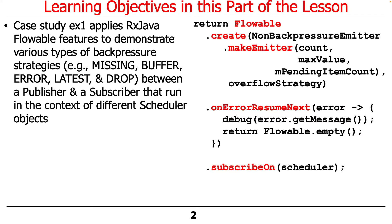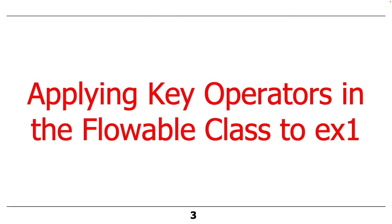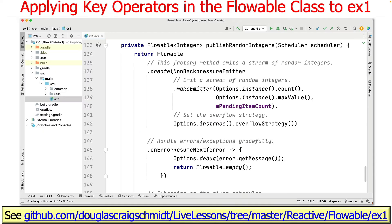The publisher will run in one scheduler context and the subscriber will run in a different scheduler context. This is what happens when you have backpressure-unaware publishers and subscribers, and you have to deal with that - the subscriber has to find some way to handle it. We're going to look at the code in the EX1 project in my reactive flowable folder in my live lessons GitHub repository.